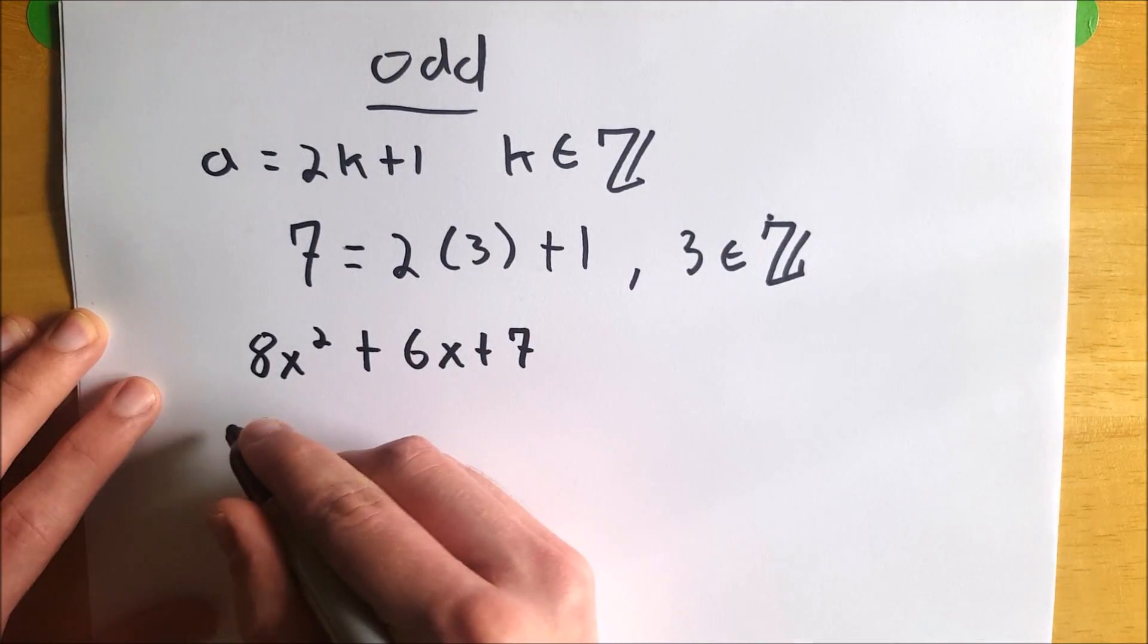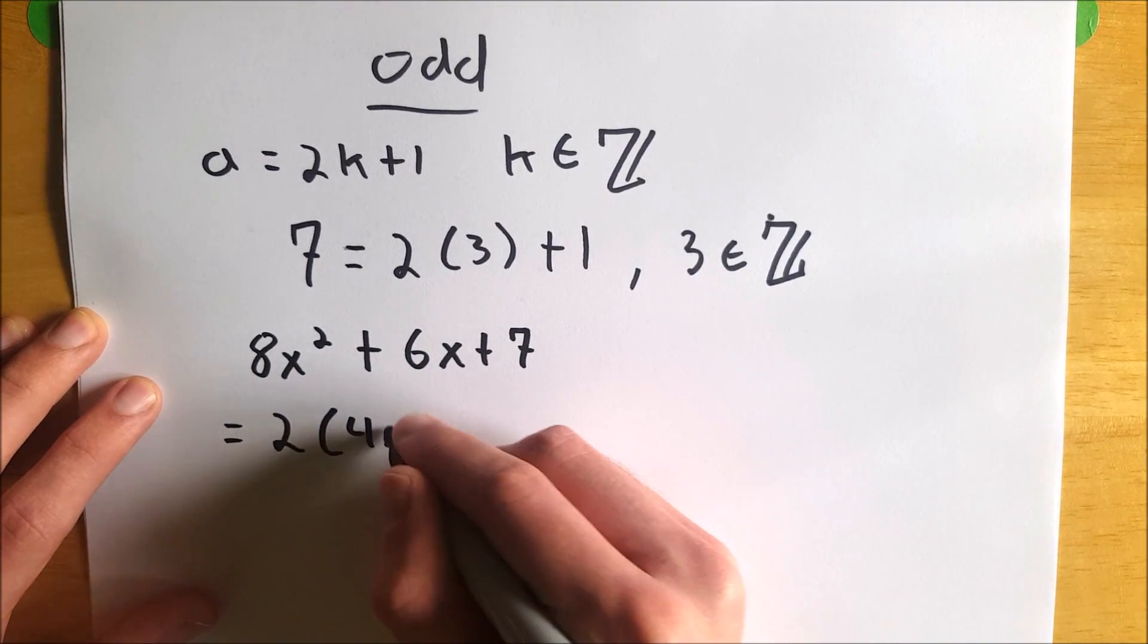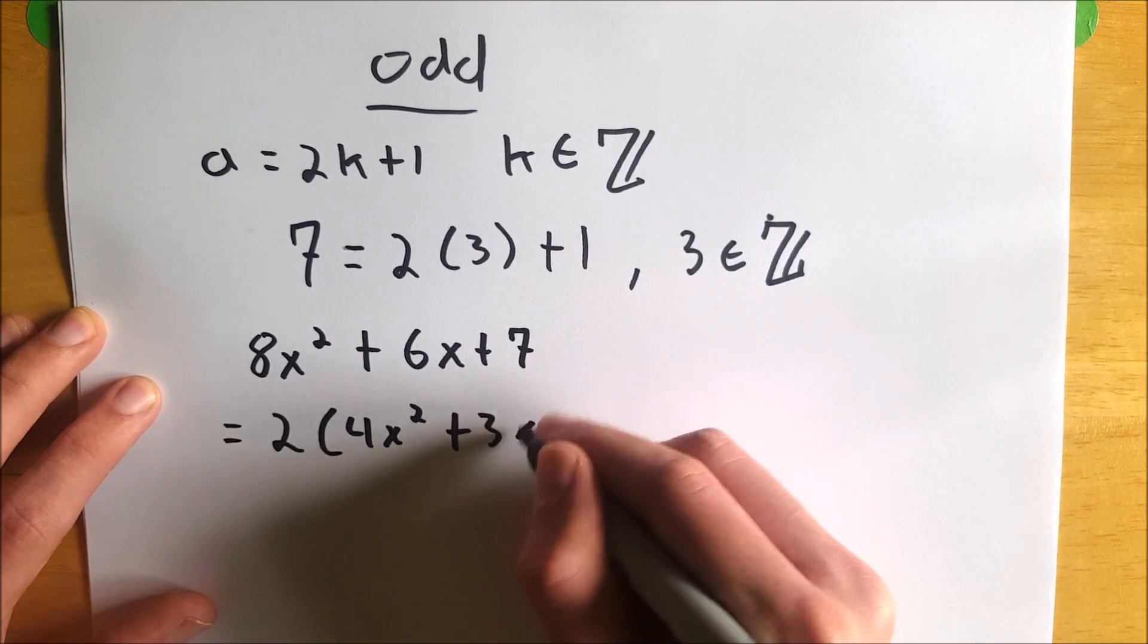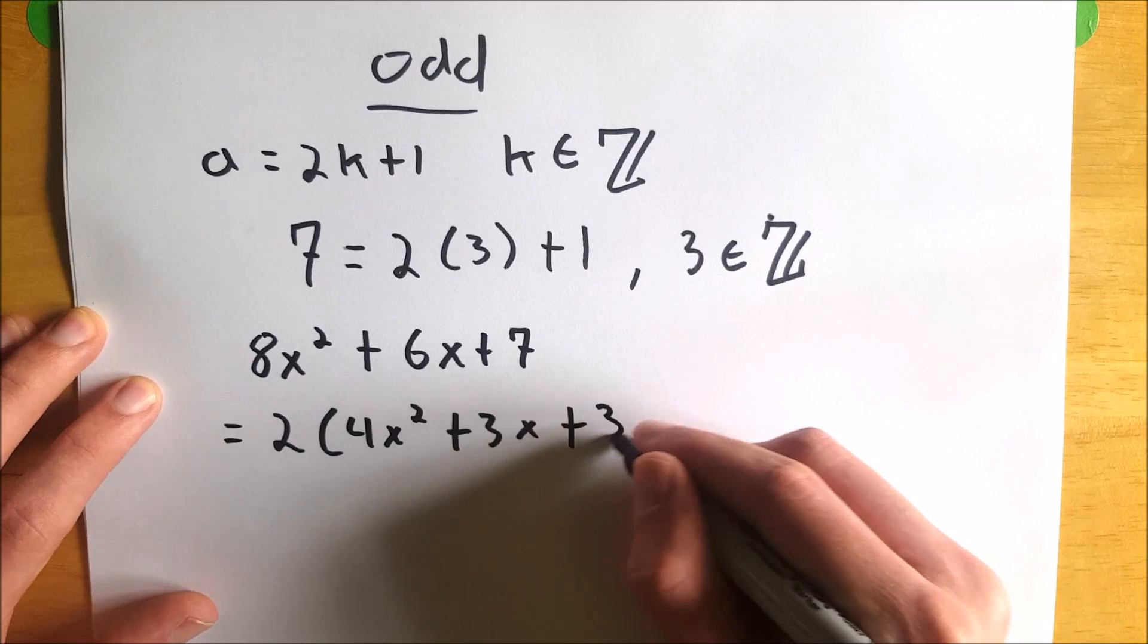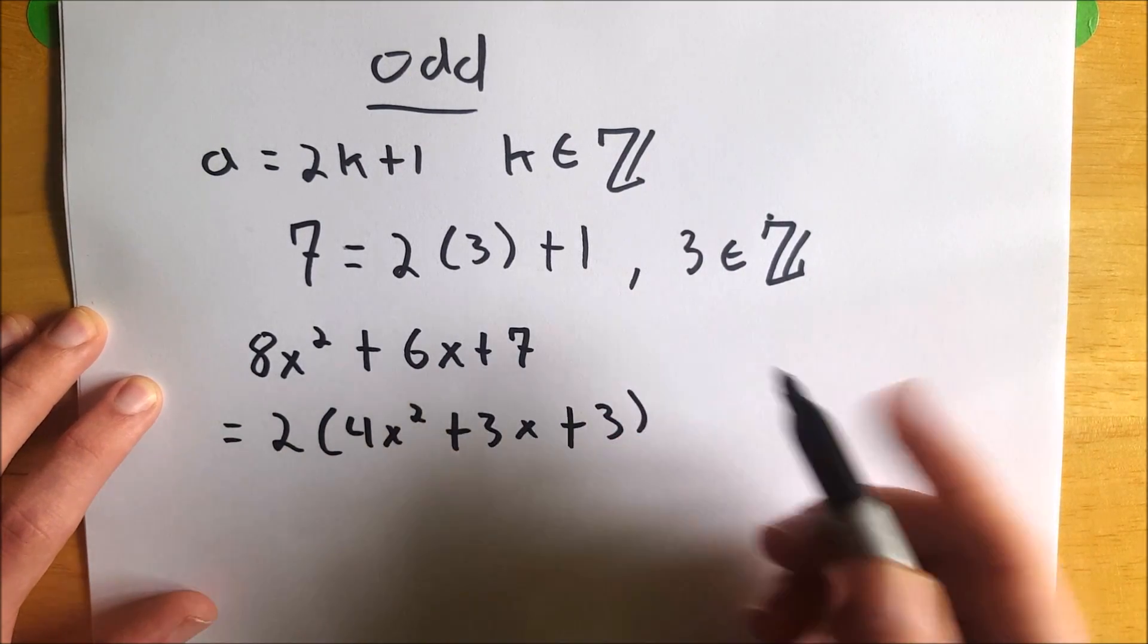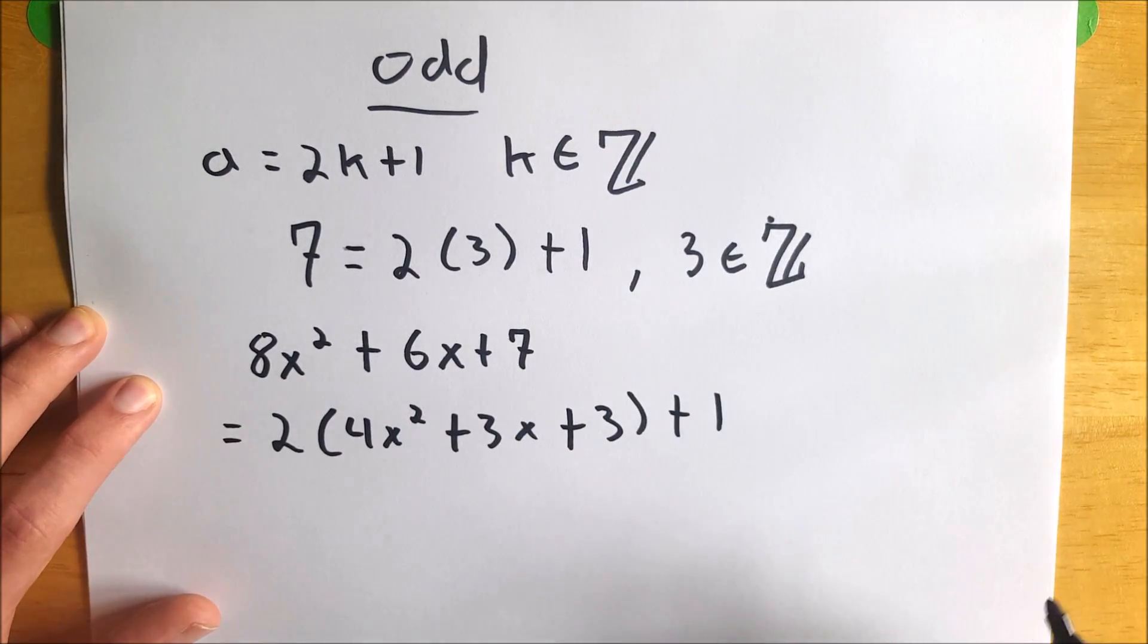Well, we know that this is equal to 2 multiplied by 4x squared because 2 times 4x squared is 8x squared plus 3x because 2 times 3x is 6x plus 3. And then what do we have here? 2 times 3 is 6, which isn't quite 7. So after the parentheses, we tack on a 1.